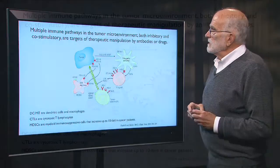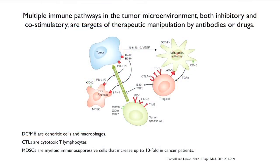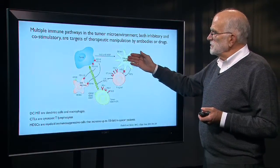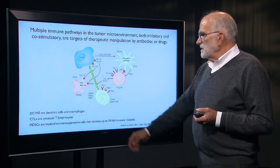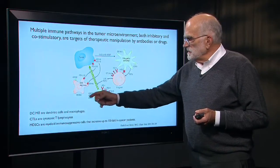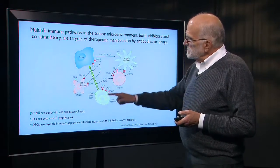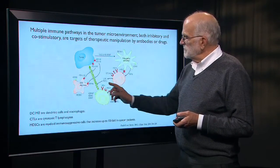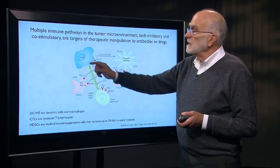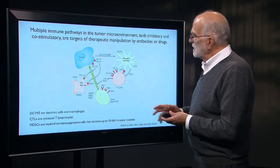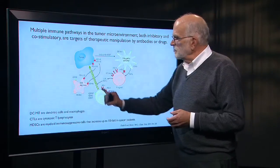Thinking about the immune pathways that might be involved, there are actually many — the interactions in the immune system with cancers are complicated. In the tumor microenvironment, there are both inhibitory and stimulatory pathways that can be targeted by either antibodies or drugs. The blue represents a tumor cell; there is also a dendritic cell or macrophage, a T regulatory cell, a cytotoxic T lymphocyte, and a myeloid immunosuppressive cell. The cytotoxic T lymphocyte is the cell effective in anti-tumor activity, and you want to upregulate it. With that background understanding of the communication network, one could steer research strategy to upregulate that interaction.